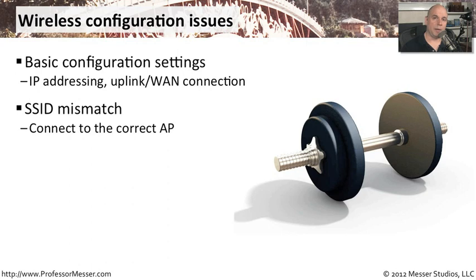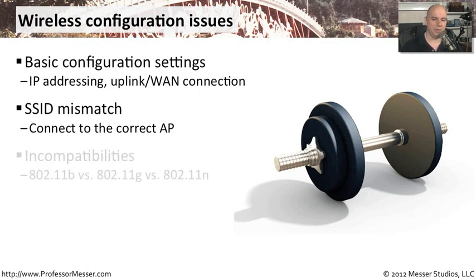In larger environments where we have more than one access point, we want to make sure that all of the access points have the same SSID. So as people move across one side of the building to the other, they can seamlessly move from one access point to the other. If we name one of the access points with the incorrect name, users will not be able to seamlessly move and will not be able to connect to the right access point. So we want to make sure that we get our SSIDs exactly correct.